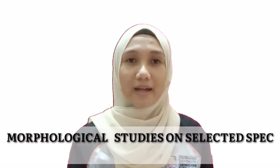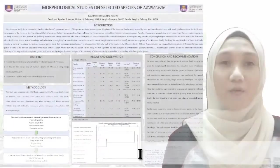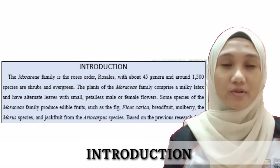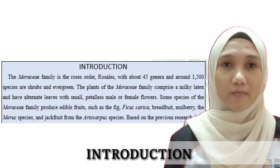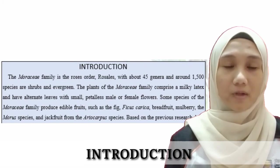Today I would like to share my thesis with the title Morphological Studies on Selected Species of Moraisae Family. The Moraisae family is the order of rules which consists of about 45 genera and around 1,500 species which are shrubs and evergreen, distributed mainly in subtropical and tropical regions. The plants of the Moraisae family comprised of a milky latex and have alternate leaves with small petals, male or female flowers.